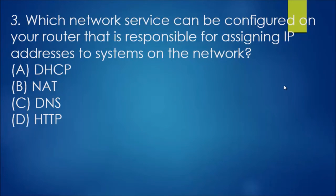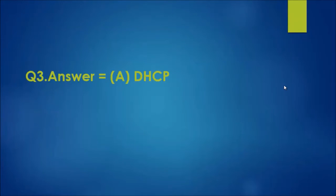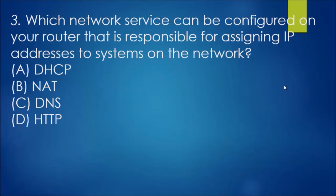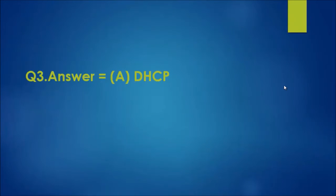Number three: which network service can be configured on your router that is responsible for assigning IP addresses to systems on the network? The answer is DHCP, because that's exactly what it does — DHCP assigns IP addresses to systems on the network dynamically.